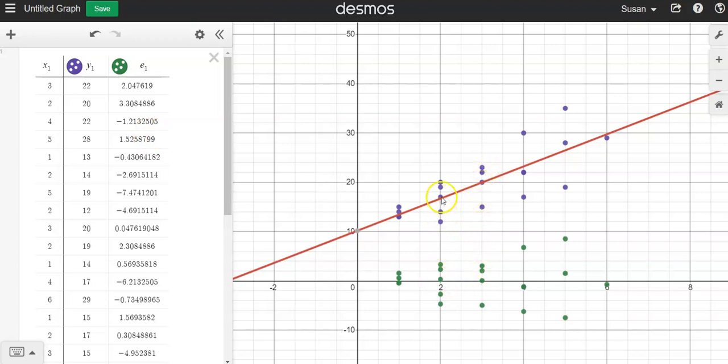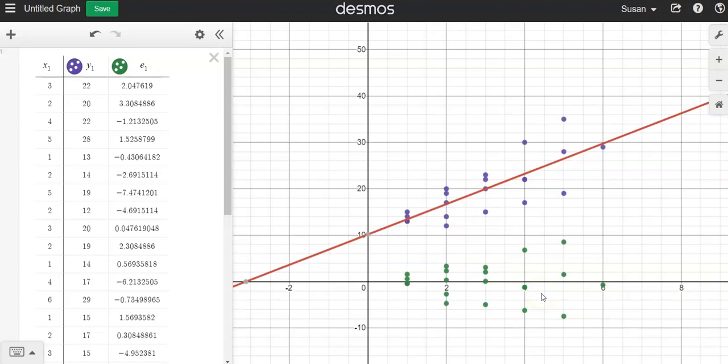If your point is above the line then you have a positive residual, and if your point is below the line you have a negative residual. And the further away your point is from this line, the bigger the error.